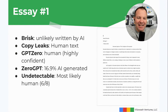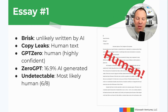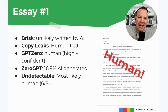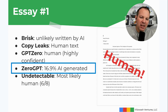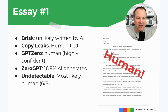If you guessed that essay number one was written by a human, you would be correct. This is the only essay that was not written by AI. Let's take a closer look at how our AI detectors did. Brisk Teaching did a nice job — unlikely written by human. So did Copy Leaks, GPT Zero, and Undetectable. Zero GPT was a little concerned; it thought that possibly up to 70% was AI generated. However, this is 100% written by a human eighth grade student.